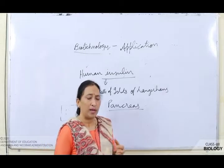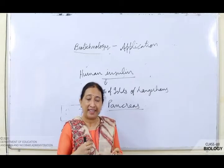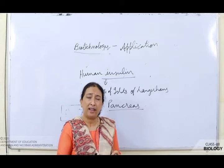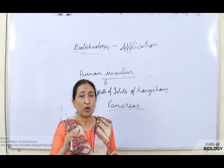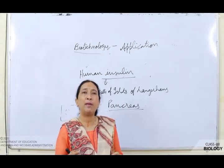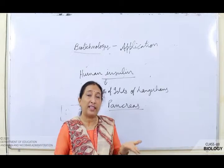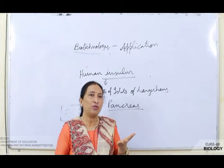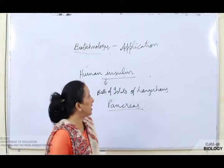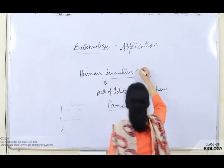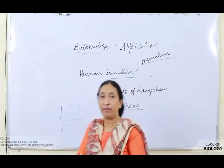Earlier, insulin was extracted from the pancreas of cows and pigs, but it was not matching highly with human insulin. Many people developed allergic reactions to it. So they thought of using recombinant DNA technology for synthesizing insulin. The first insulin synthesized in the laboratory came under the name Humulin.